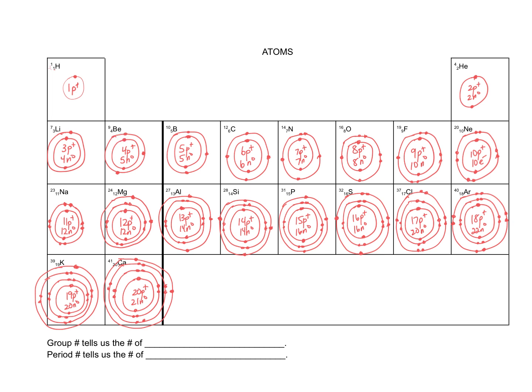Beryllium needs four electrons: one, two in the first shell, then three, four. Five protons means five electrons: one, two, three, four, five. Six protons, six electrons: one, two, three, four, five, six. Seven protons, seven electrons: one, two, three, four, five, six, seven. Eight protons, eight electrons: one, two, three, four, five, six, seven, eight.